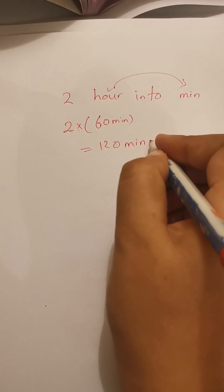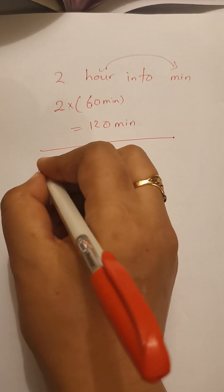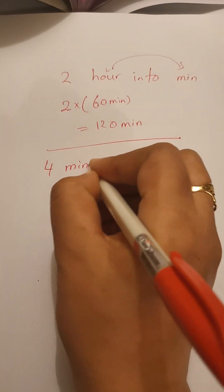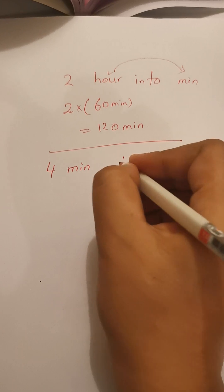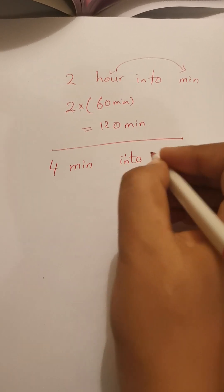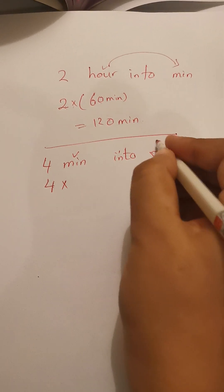Another example - 4 minutes into seconds. Again, from big to small, so we are multiplying. How many seconds in a minute? 60 seconds. So at the place of minute we write 60, because in one minute you have